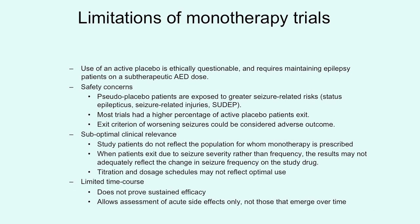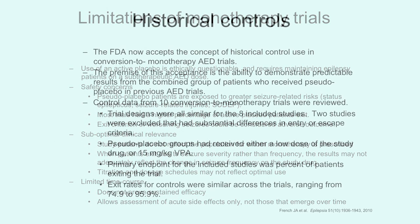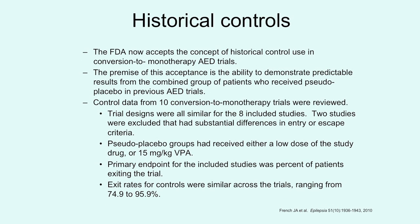Monotherapy trials can be useful, but there are definite limitations. One of the biggest concerns is that it remains ethically questionable to subject the active placebo arm to a dose of drug that's thought to be subtherapeutic. This puts those patients at risk for seizures, seizure-related injuries, status epilepticus, and even SUDEP. Patients in the active placebo arms of clinical trials have had a higher rate of exiting than those who received the active drug. That led to the idea of using data already gathered from clinical trials — that is, historical controls — rather than subjecting new groups of patients to active placebo.